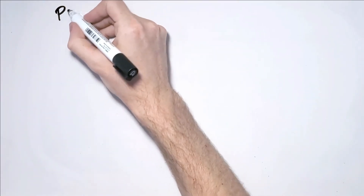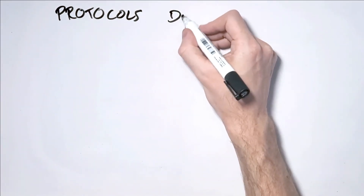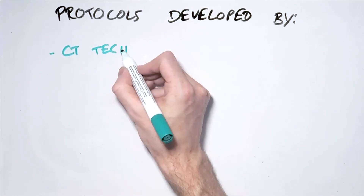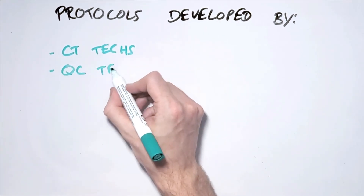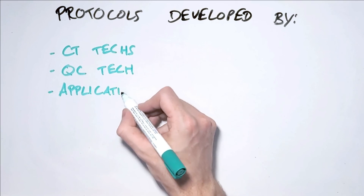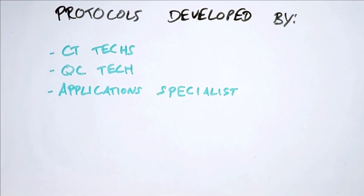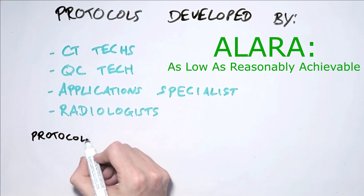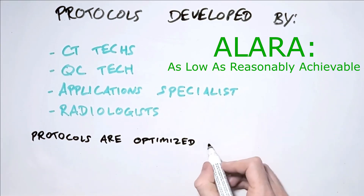That's a broad look at a CT head protocol and what goes into a protocol. When developing CT protocols, it's generally a collaborative effort between the CT techs, a QC tech, an application specialist who is an employee of the vendor — Siemens, Philips, Canon, GE, and so on — who is an expert in that particular machine, and of course the radiologists. With regard to dose, we are always optimizing to abide by the ALARA principle, meaning as low as reasonably achievable. Ultimately, the radiologists have the final say on the level of noise that is considered reasonable without affecting the diagnostic ability of the scan.